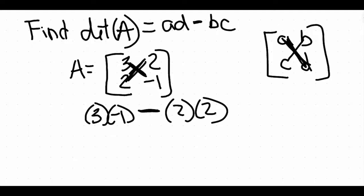And then all we have to do is simplify this and we're done. So for simplifying this, do remember your rules for order of operation. We do multiply before we subtract. 3 times negative 1 is negative 3 minus 2 times 2 is 4. And when we subtract these two numbers together, negative 3 minus 4 is going to give us negative 7.